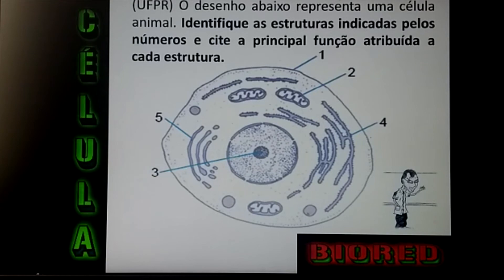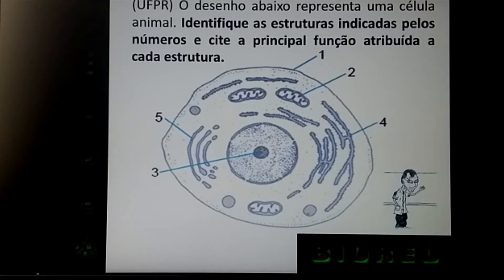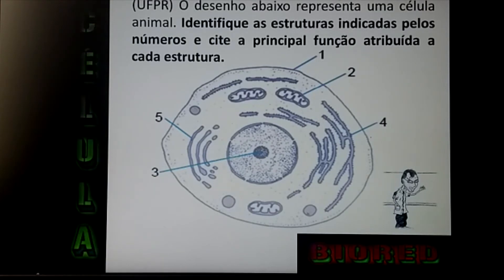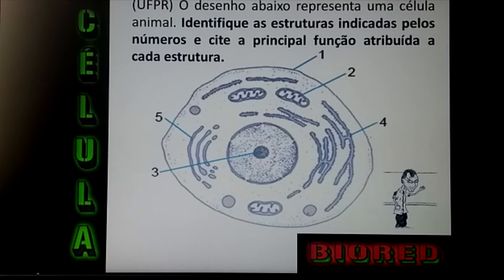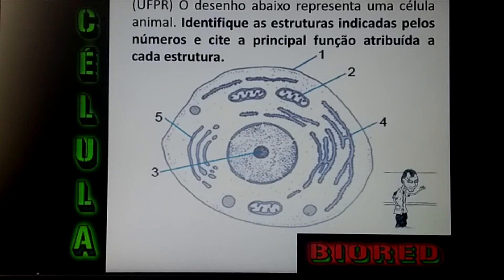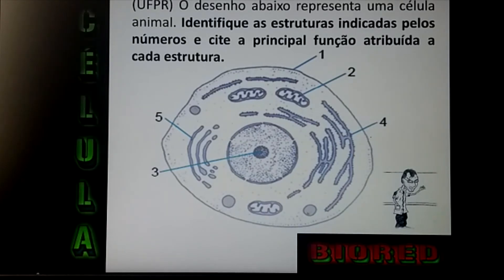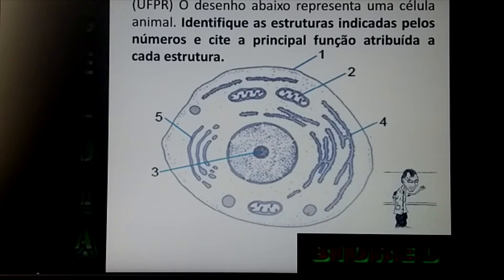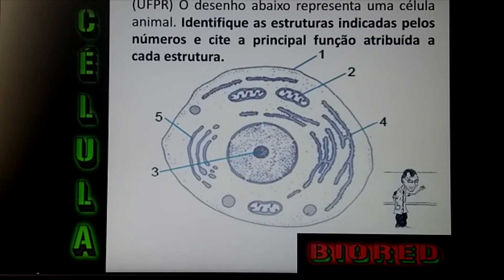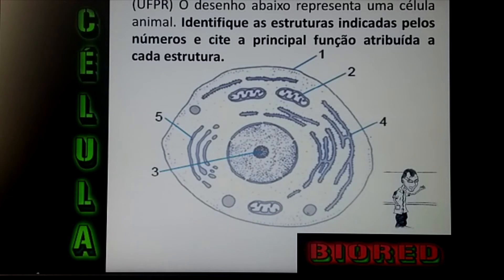O número 4 é uma estrutura cheia de pontinhos em volta: retículo endoplasmático rugoso, e as duas principais funções são transporte de substâncias e síntese de proteínas. E o número 5 é o complexo de Golgi, cuja principal função é armazenar, empacotar e secretar.